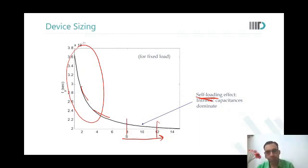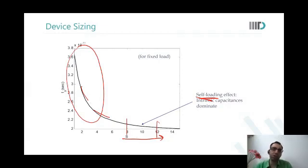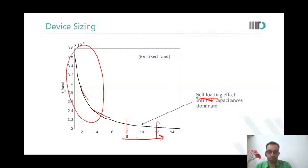A student asks whether these optimizations target rise/fall time or propagation delay. The instructor clarifies: 'We are more interested in propagation delay. Rise time and fall time are important to reduce power — if you reduce them, power also reduces, but increasing size also increases capacitances, so there's a tradeoff.' The same methods apply intuitively to reduce rise and fall times. However, self-loading for rise and fall time would appear much earlier because of faster discharging.